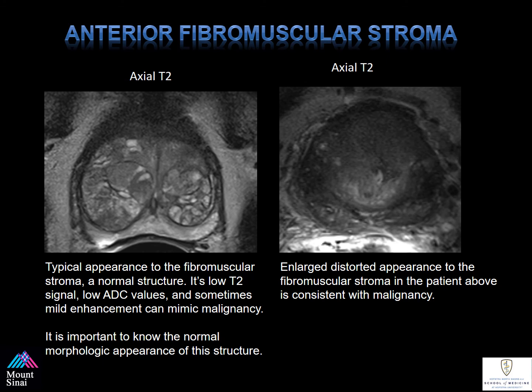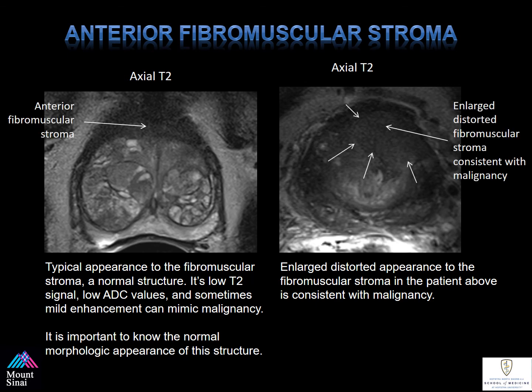The anterior fibromuscular stroma is a very important region of the prostate to evaluate. The typical appearance is low signal on T2 and low signal on ADC, which could be signs of malignancy. However, the anterior fibromuscular stroma should not have any early arterial enhancement — if there is mild enhancement, this should raise your suspicion for malignancy. Notice on the left there's no distortion of the gland, while on the right, there's an abnormality of the anterior fibromuscular stroma displacing the central gland. It's important to include this in the segmentation for MRI targeting, as your MR segmentation should include the anterior fibromuscular stroma because ultrasound segmentation picks it up as part of the prostate.